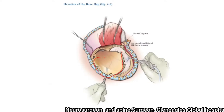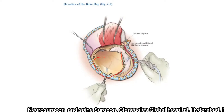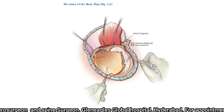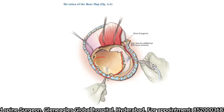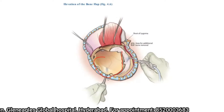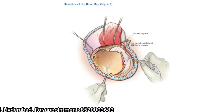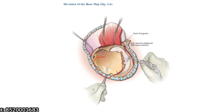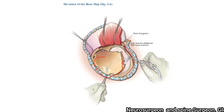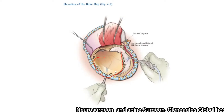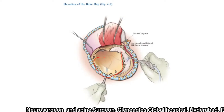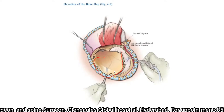A periosteal elevator or similar tool is introduced along the posterior edge of the craniotomy and used to elevate the bone from the underlying dura. This bone is placed in antibiotic-soaked saline if you are planning to store it in the abdomen. If you are planning to preserve it outside the body, hand it over to your assistant for the appropriate preserving technique.